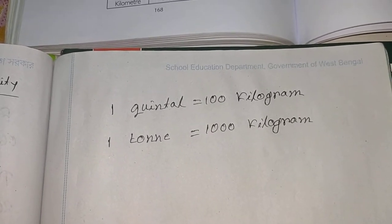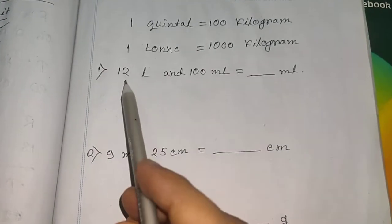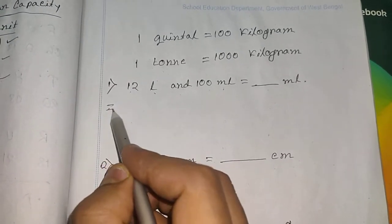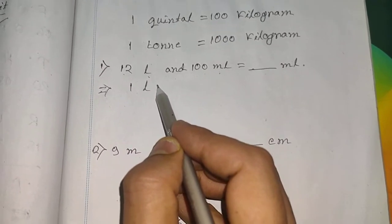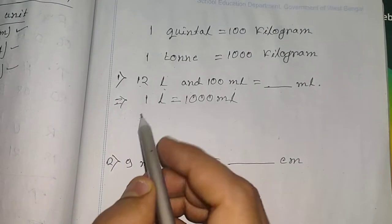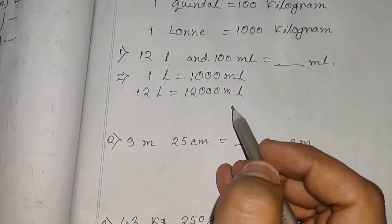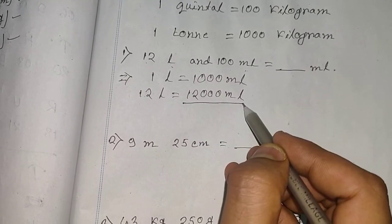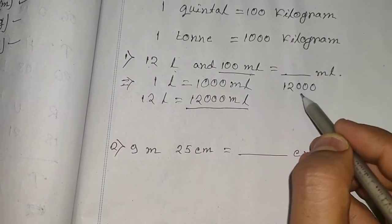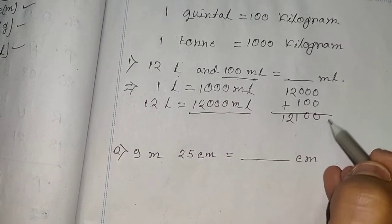Now some conversions are given. Convert 12 liters and 100 milliliters to milliliters. We know that 1 liter equals 1000 milliliters, so 12 liters equals 12,000 milliliters. We also have 100 ml, so we add: 12,000 plus 100 equals 12,100 ml. The answer is 12,100 ml.